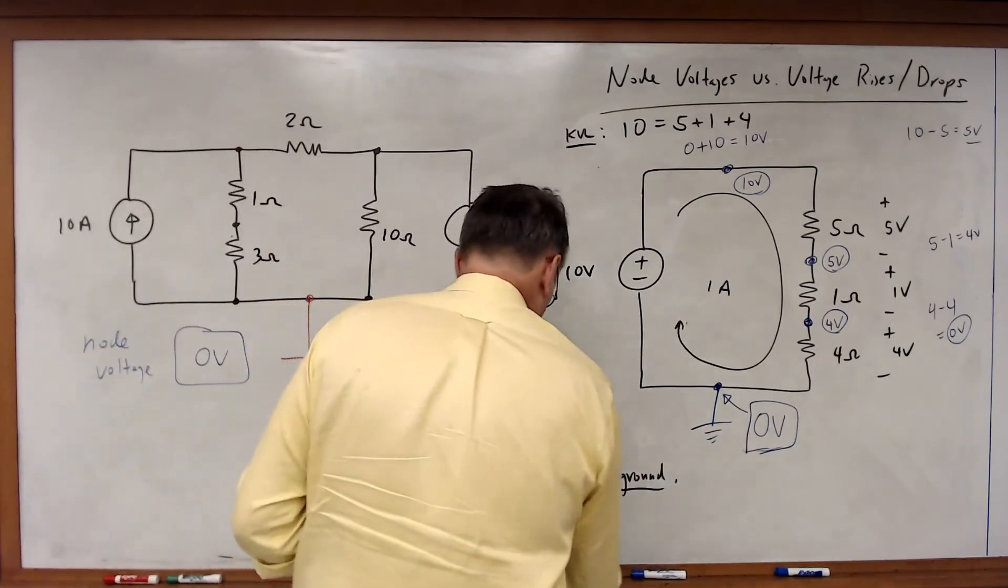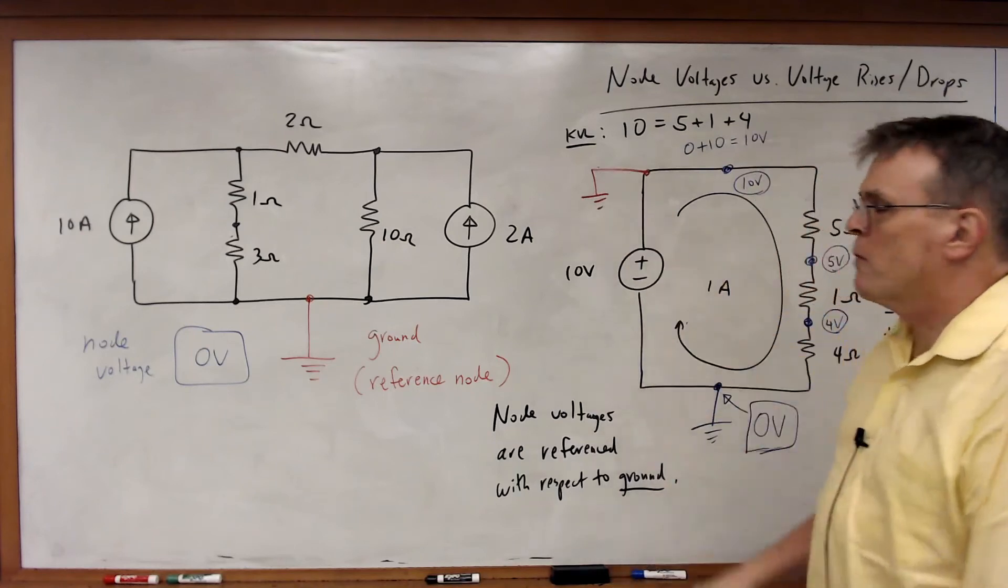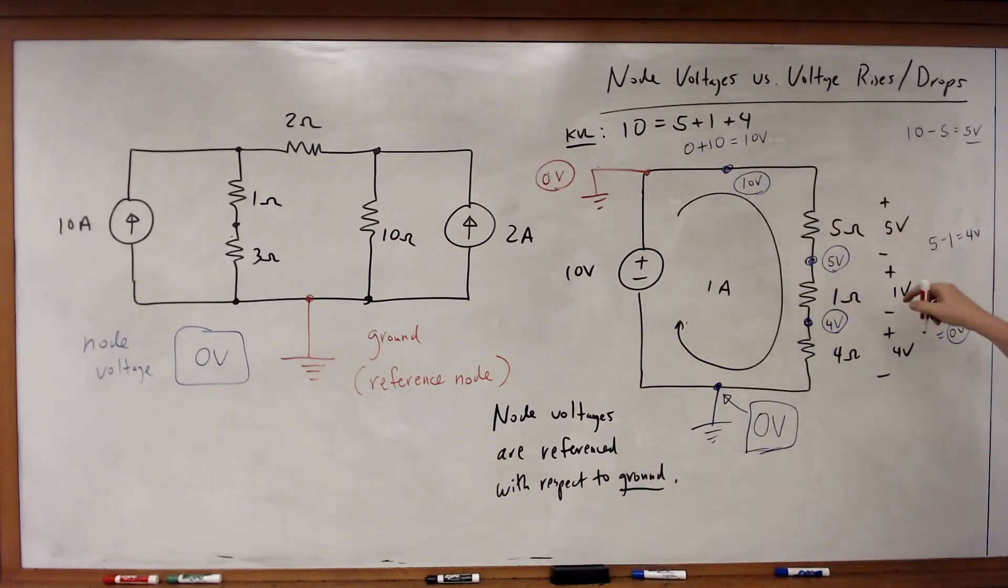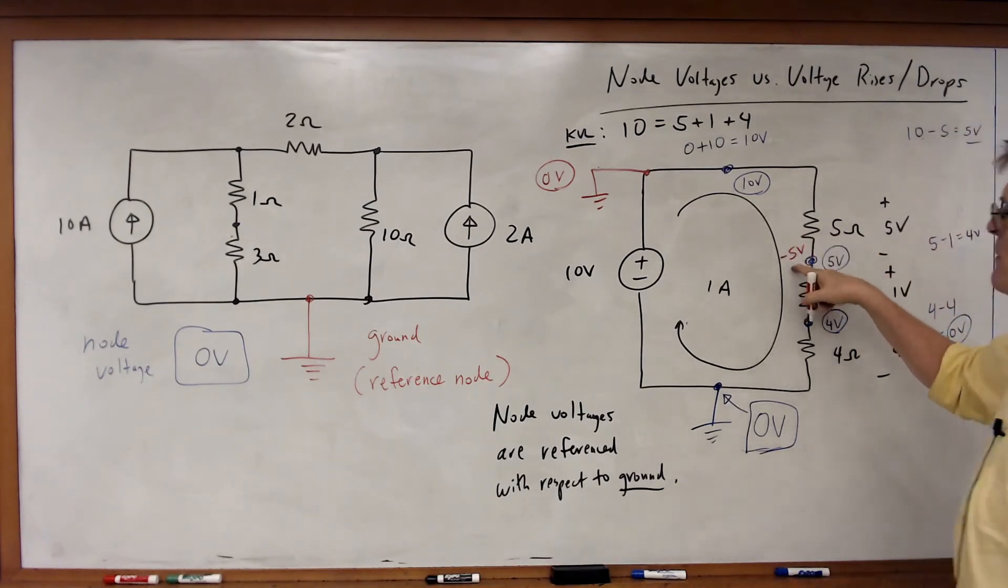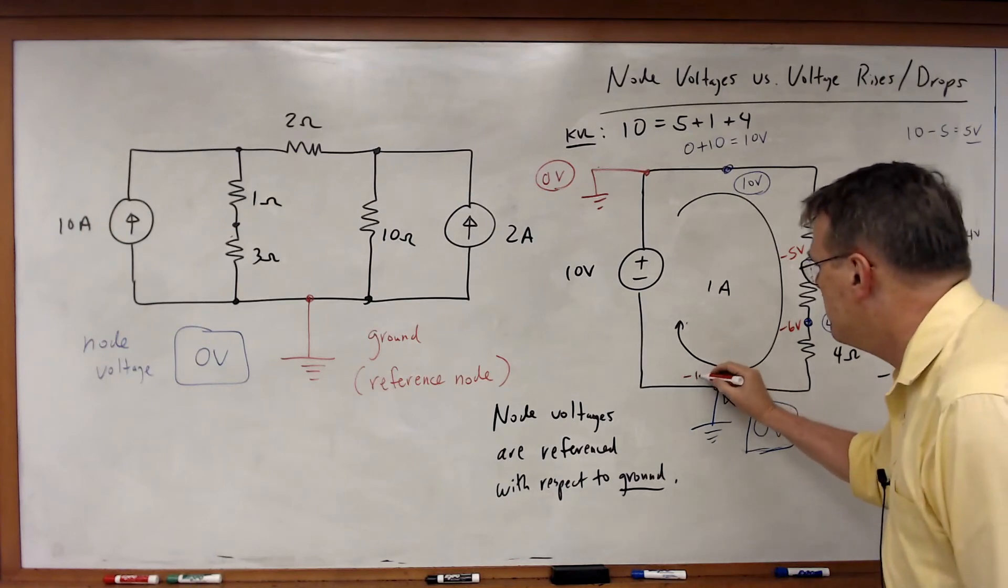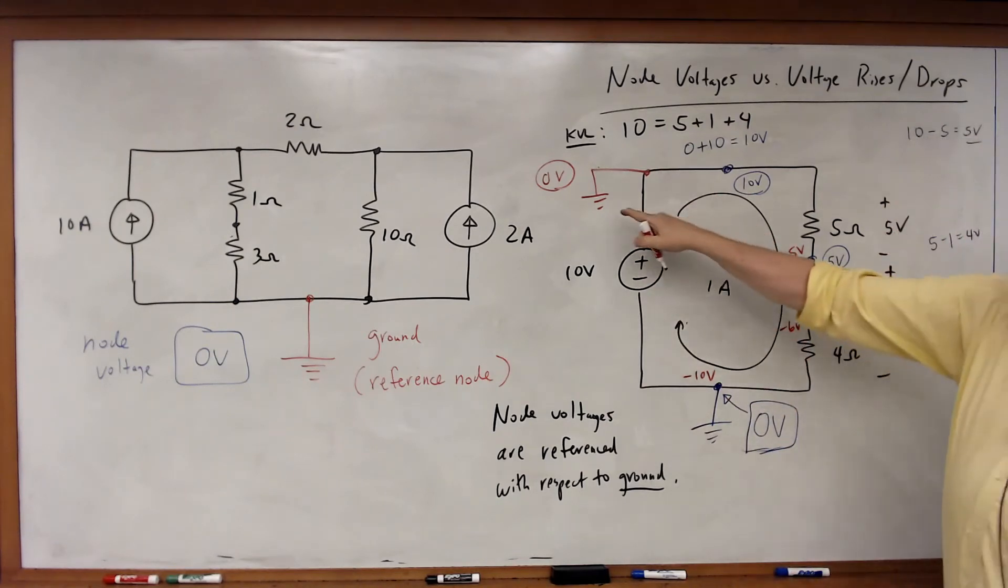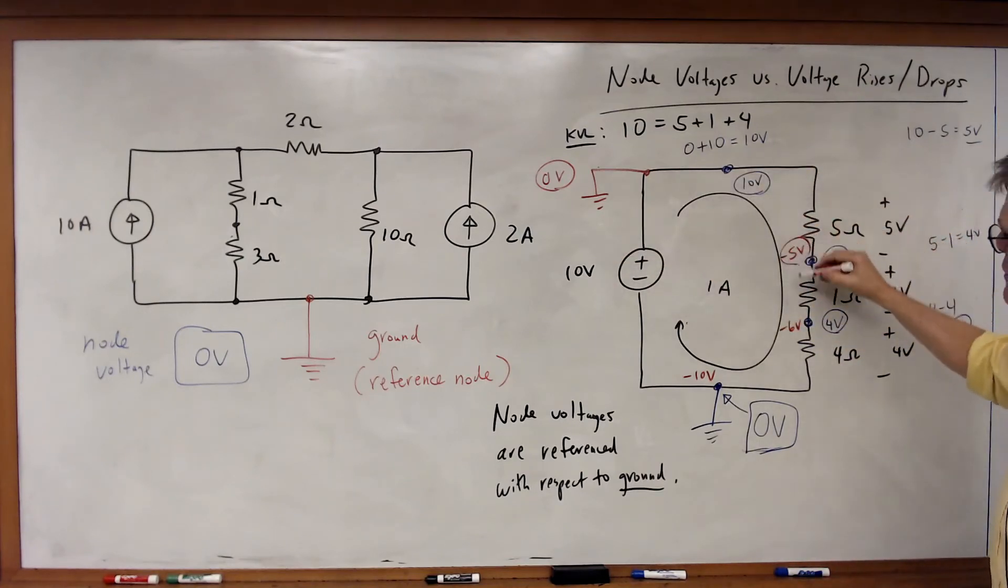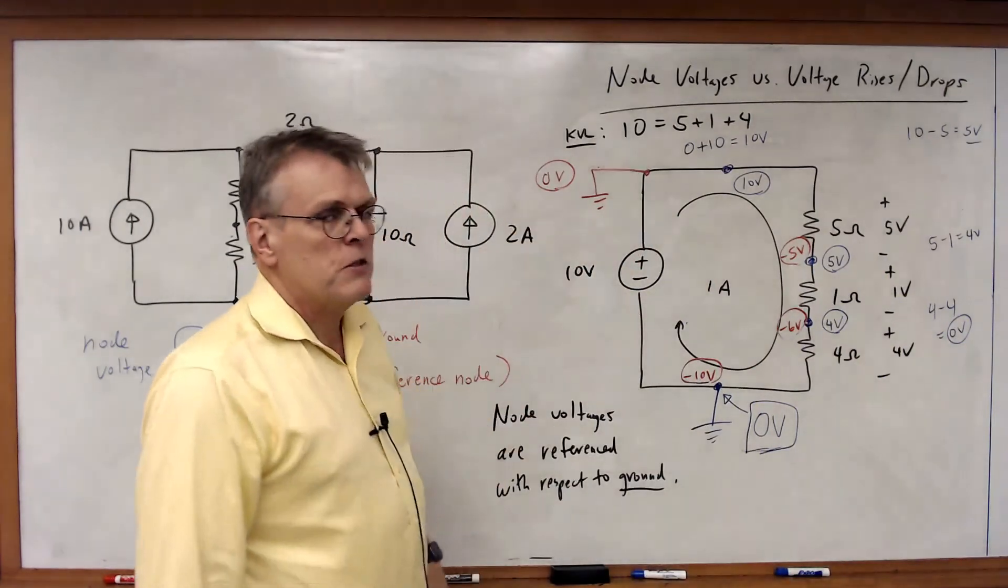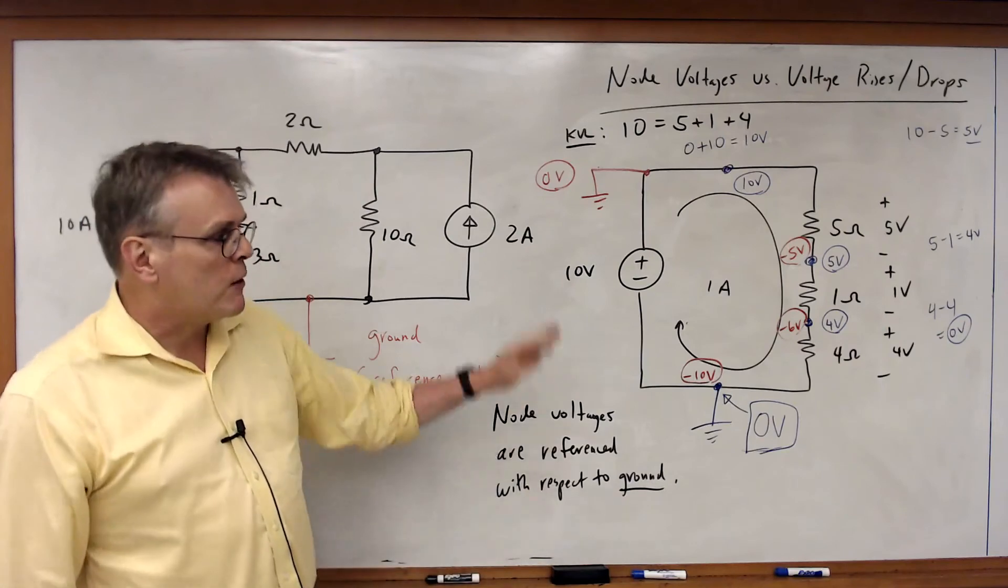What if instead I said the top node was ground? In that case, this would be 0 volts. Travel around this way, this would be minus 5 volts, minus 6 volts, minus 10 volts, and then 10 added to 10 would equal 0. So if I put the ground at the top, I would have a different set of node voltages because I've now changed the ground. The value of a node voltage depends on where you place the ground. But at the same time, where you place the ground doesn't change the solution to the circuit. You can still solve the circuit no matter where the ground is picked.